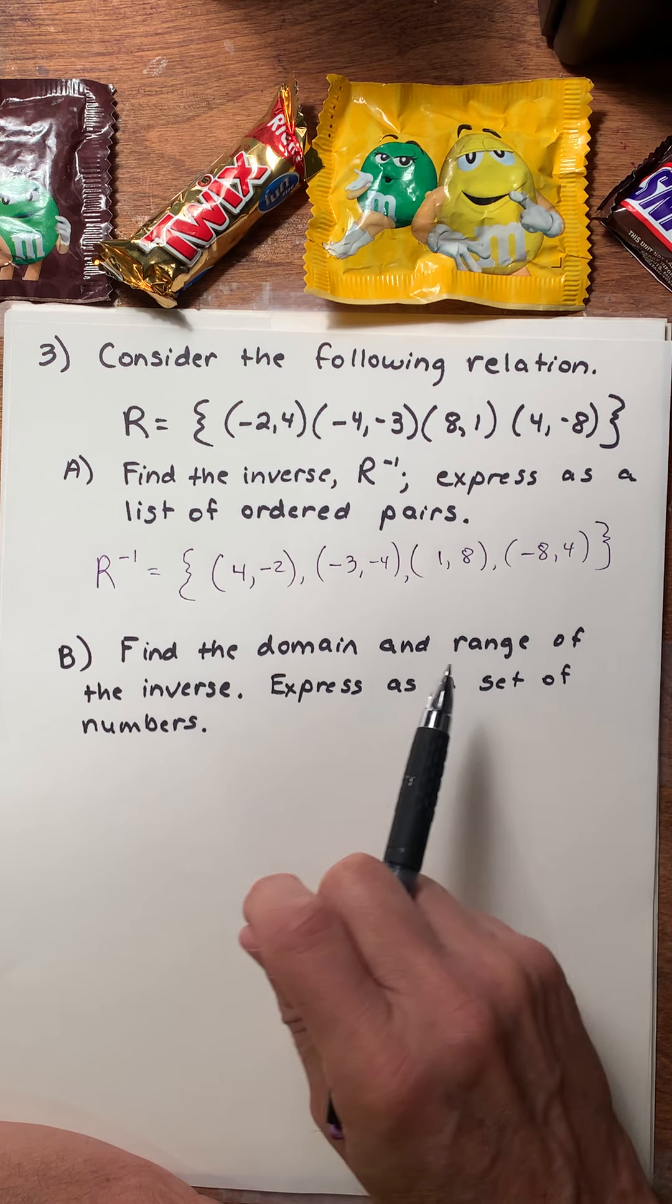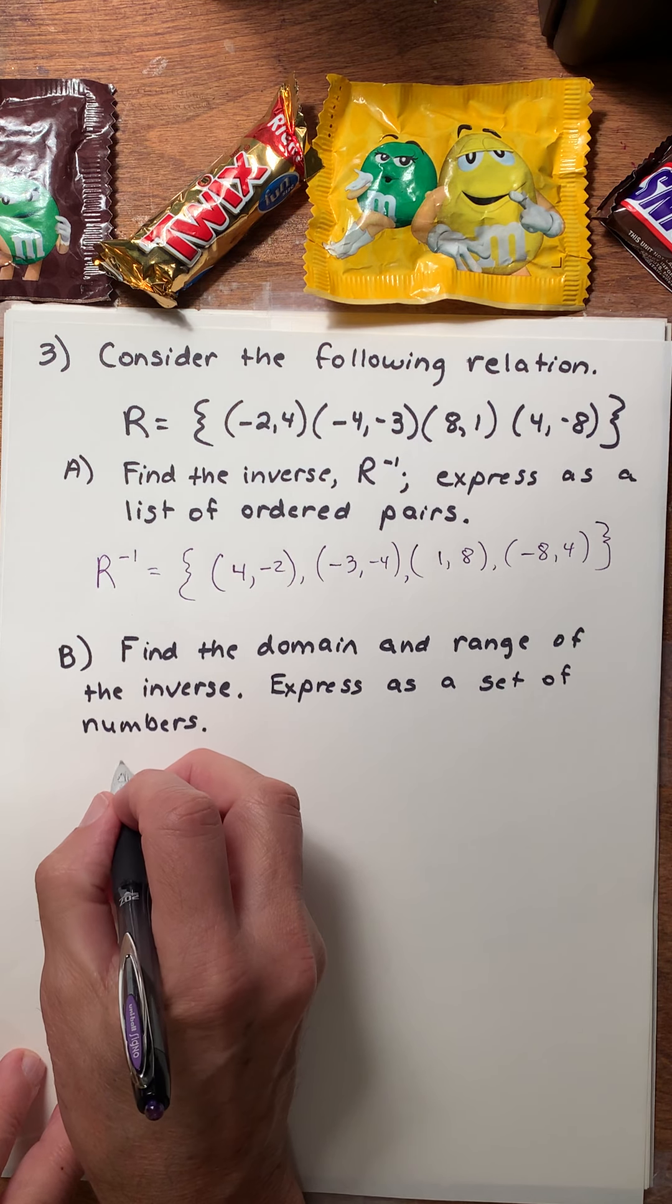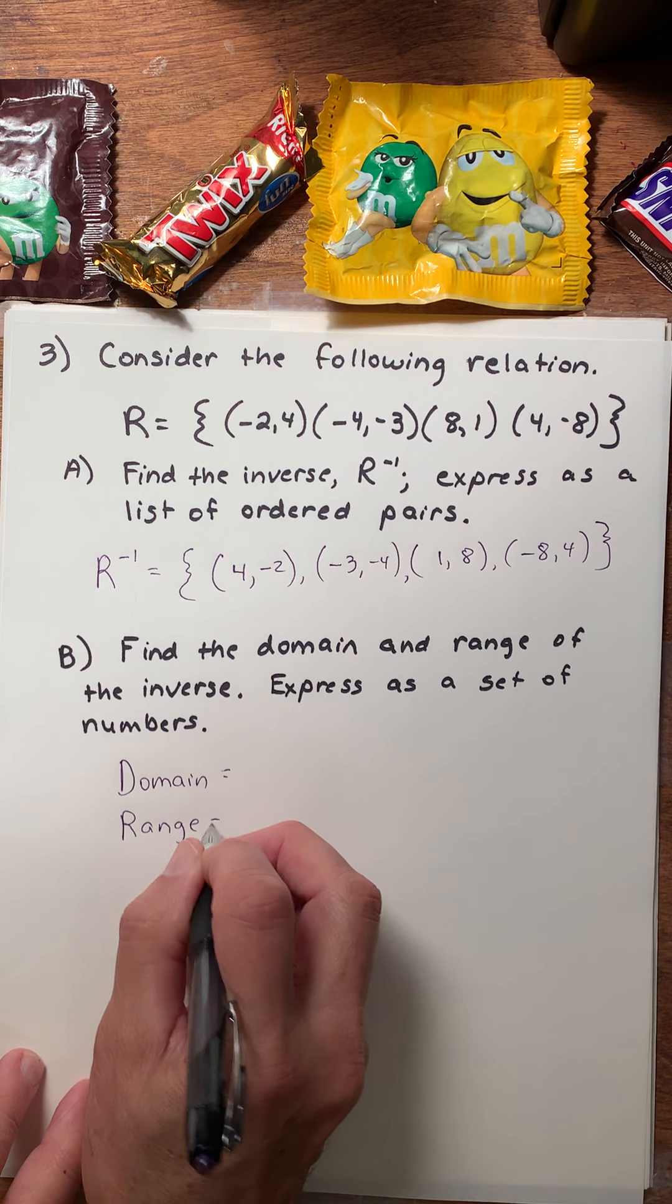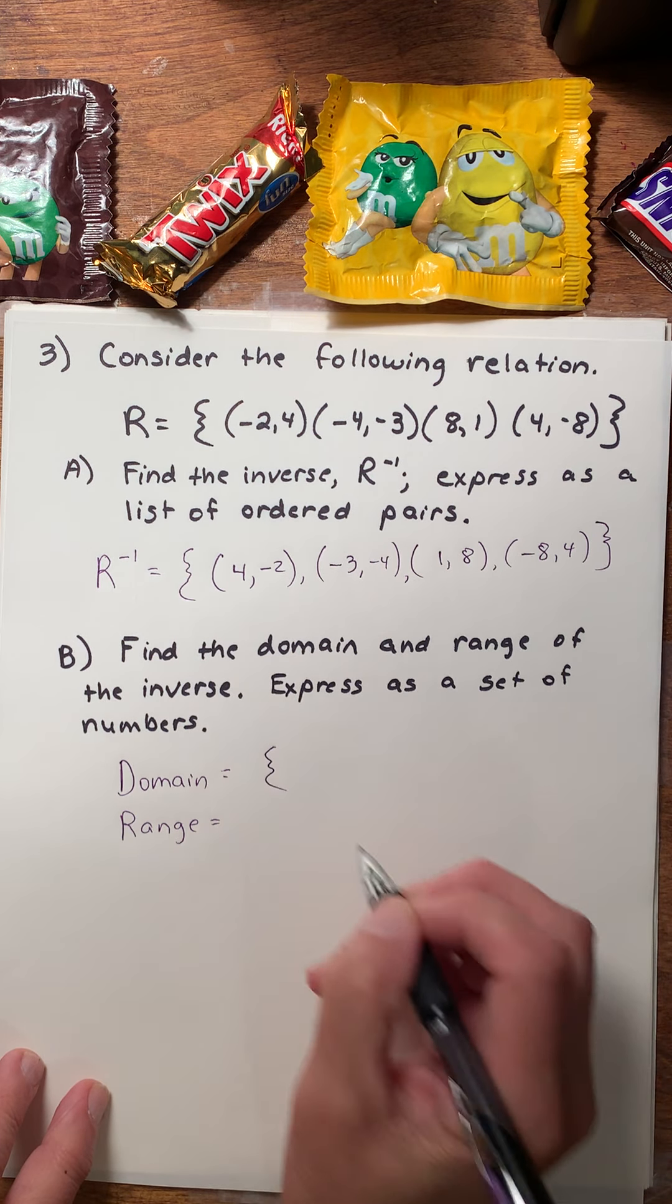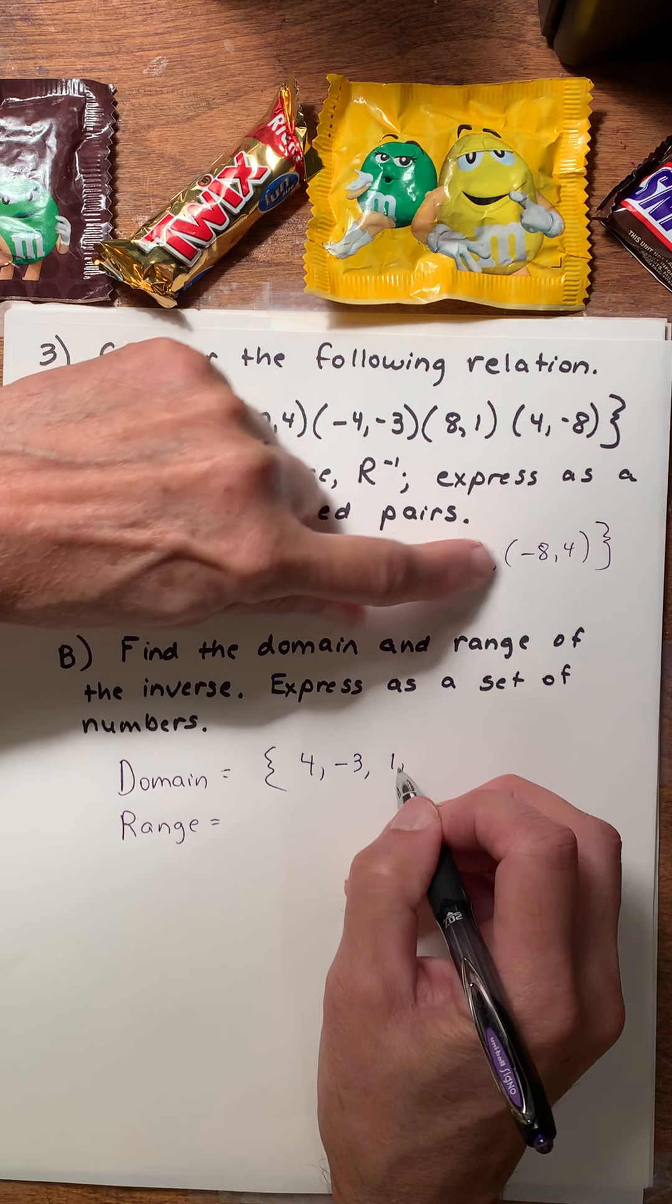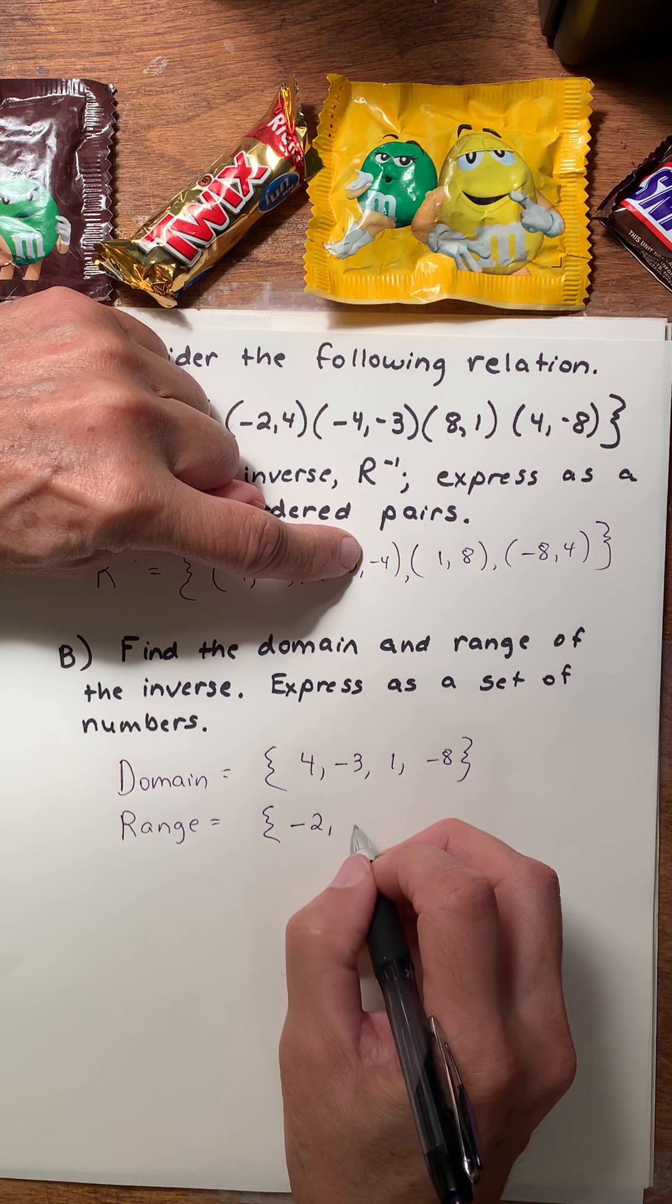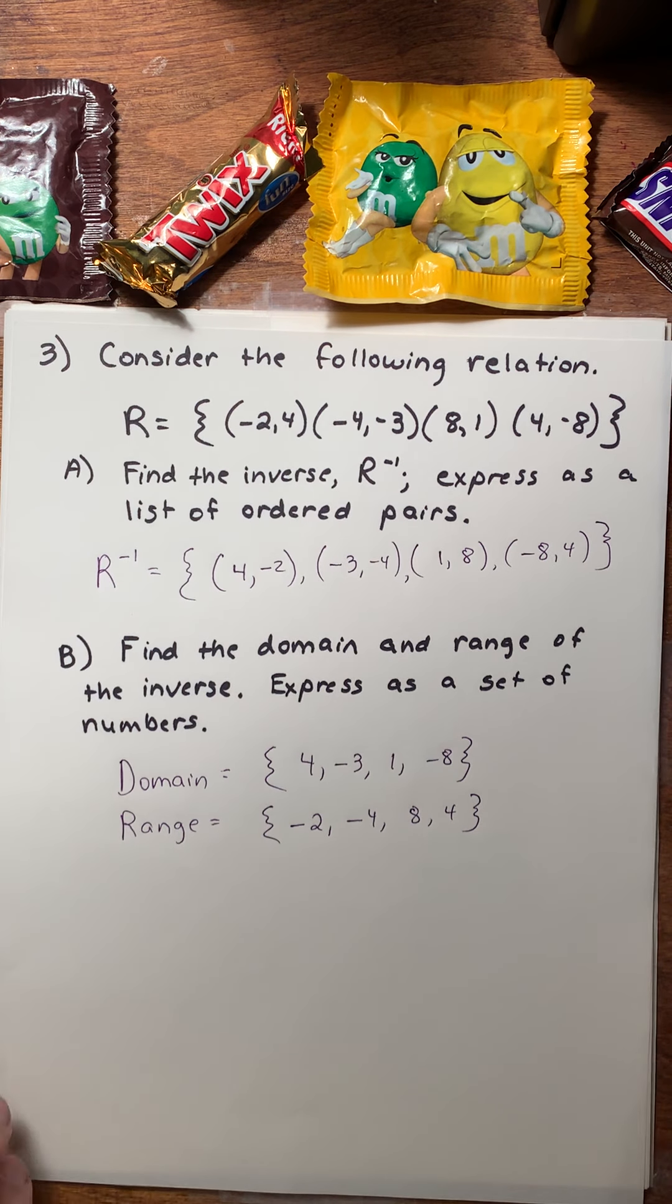Now find the domain and range of the inverse, and express as a set of numbers. So the domain, you may recall, is all my first elements. The range is all of my second elements. So it says express as a set, so I'm going to do my set notation. And the domain is all the first elements: 4, negative 3, 1, and negative 8. And the range is negative 2, negative 4, 8, and 4.